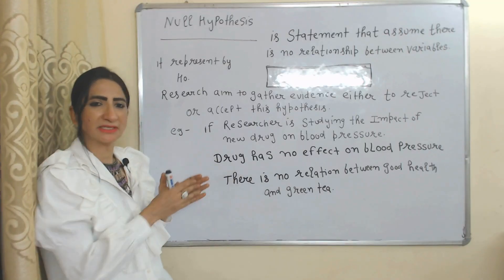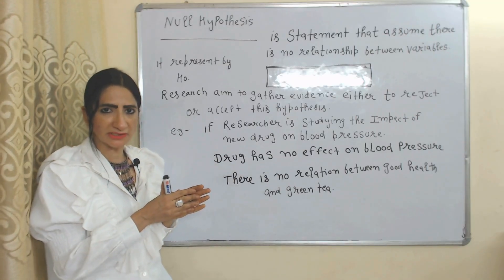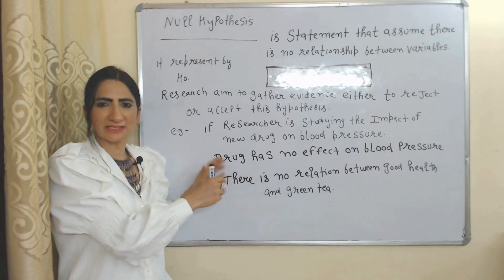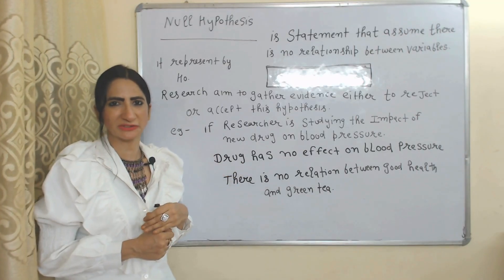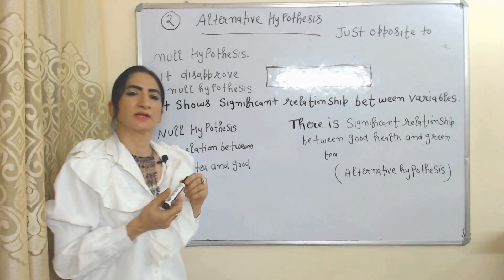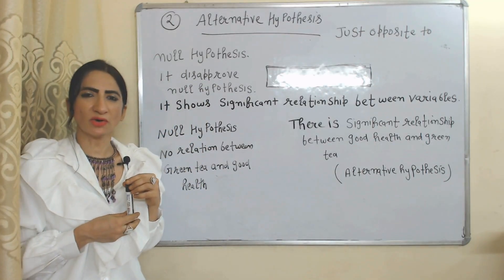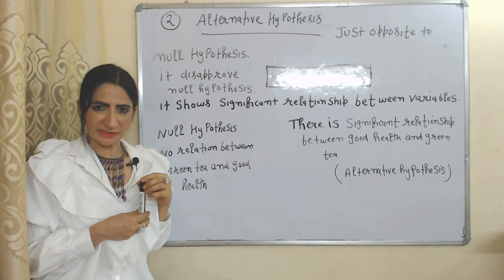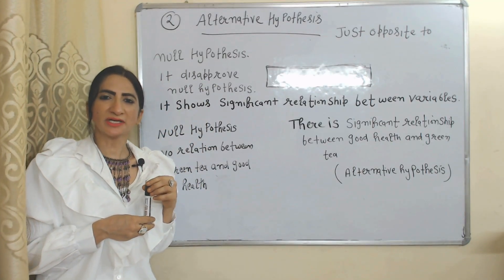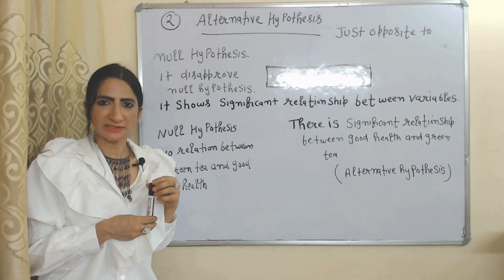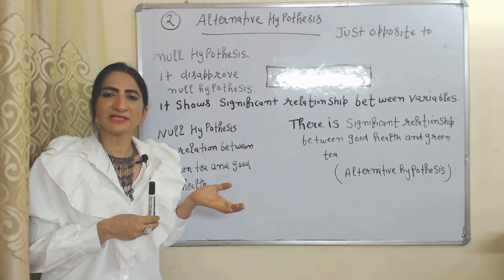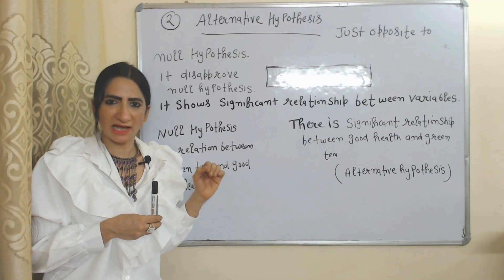Next is alternative hypothesis. Alternative hypothesis is the opposite of the null hypothesis.